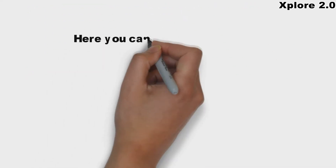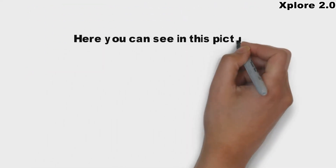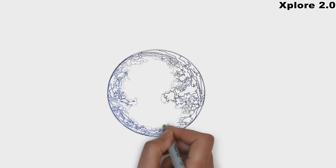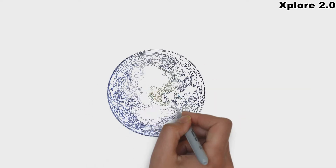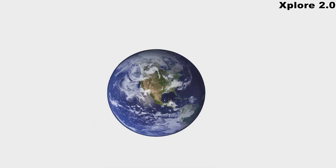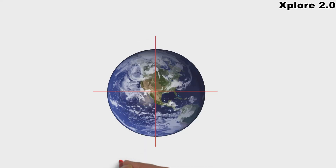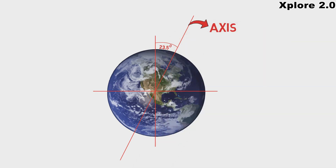Here you can see in this picture. This is an imaginary line which passes through the center of the Earth and tilted by 23.5 degree angle, called axis. The Earth is rotating on this axis.